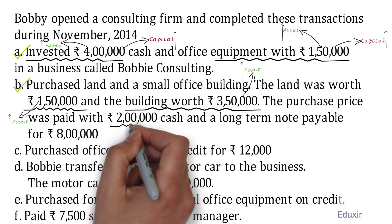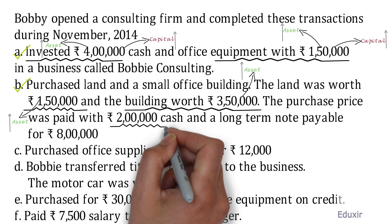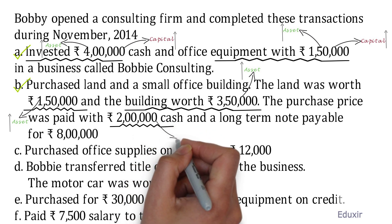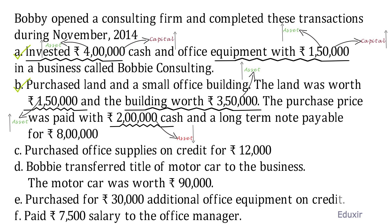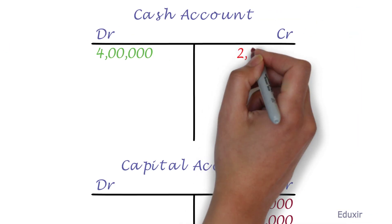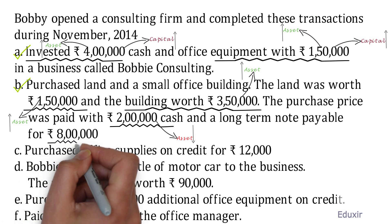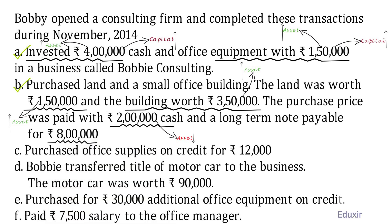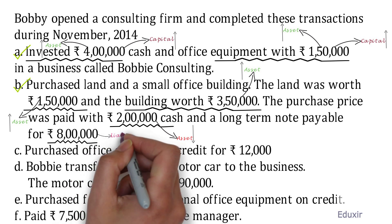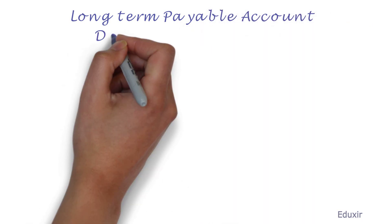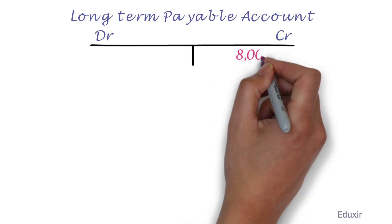The payment for these assets is partially done by paying 2 lakh rupees cash, which reduces the cash account. The rule to record a decrease in the cash asset is to credit the cash account. In addition, the business is also giving a note of 8 lakh rupees — the note payable is a liability. It increases the liabilities account, so we credit the liabilities account. Let us prepare the T account named long-term payable account and credit 8 lakh rupees into it.